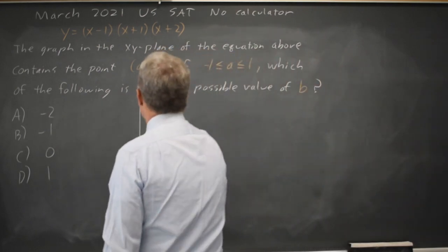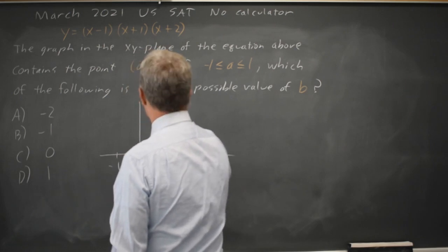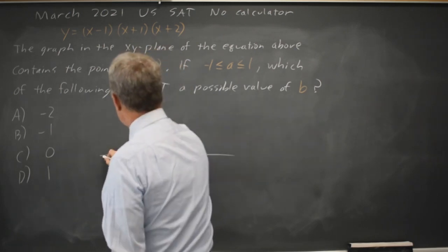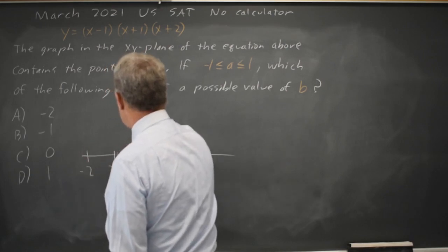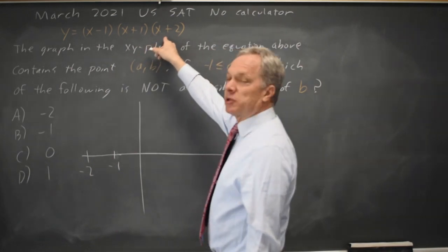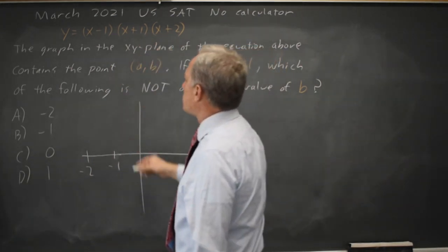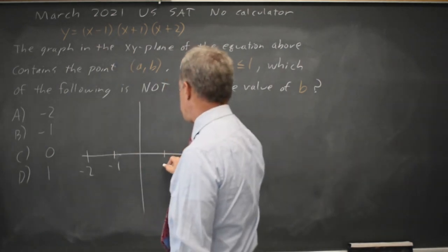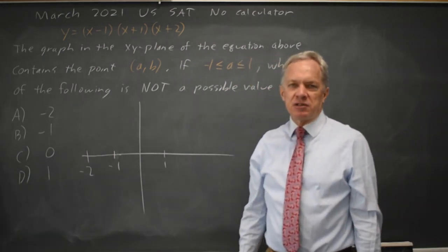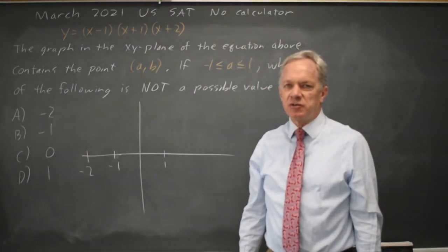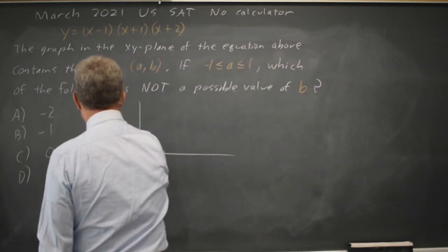If I sketch the graph of this cubic, I know it has zeros at negative 1 and at negative 2, because x plus 1 and x plus 2 are factors, so negative 1 and negative 2 are zeros, and at positive 1 because x minus 1 is a factor. We also, if we foil this out, see that this cubic has a positive leading coefficient, so the shape of the graph must be something like this.